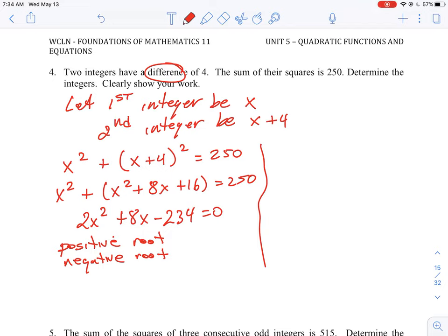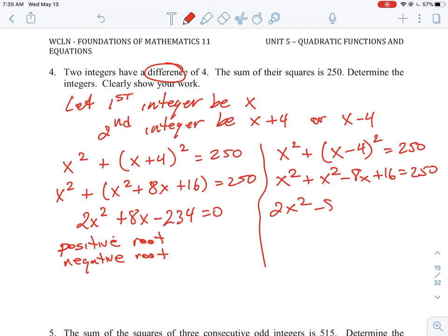The second integer, a difference doesn't just have to be plus four, it could be x minus four. So in this case, the equation would still be something similar, it would be x squared plus x minus four squared is equal to 250. Expanding this, you will get x squared plus x squared minus 8x plus 16 is equal to 250. And when you collect terms, you will get 2x squared minus 8x minus 234. So the equation is very similar.